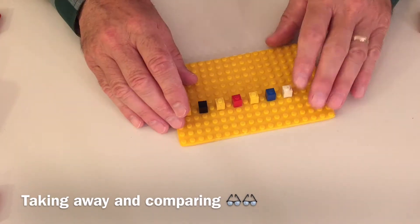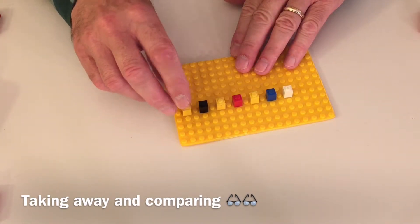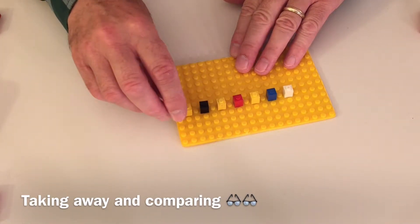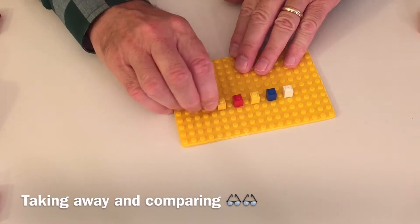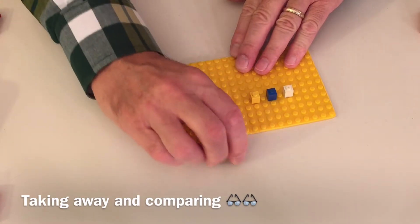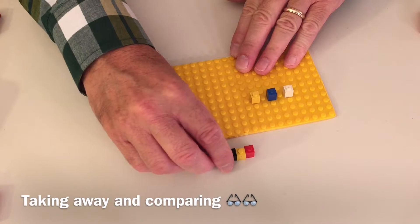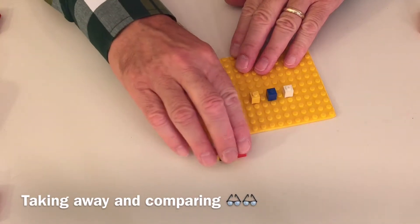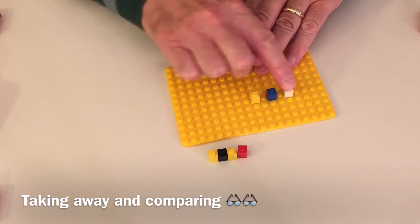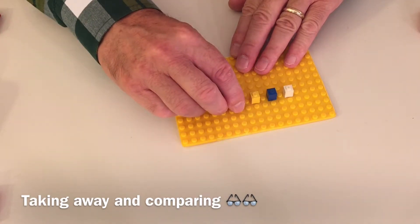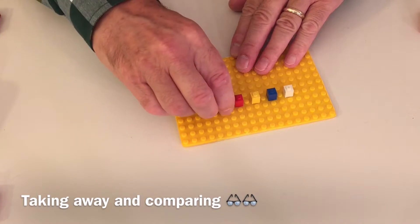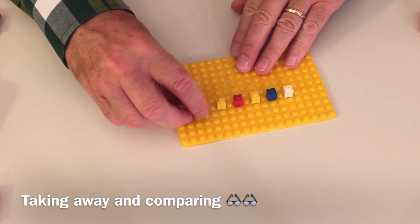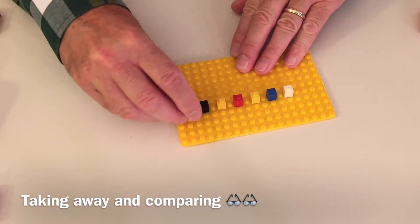We talked about you can do take away. Minus can be when you take things away. One, two, three, four. Seven minus four. How many are left over? One, two, three. If someone takes some of your items away, you can tell what is left over.